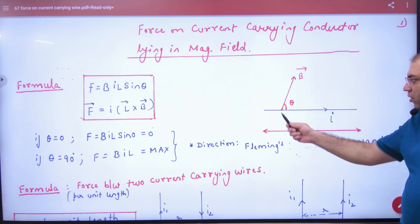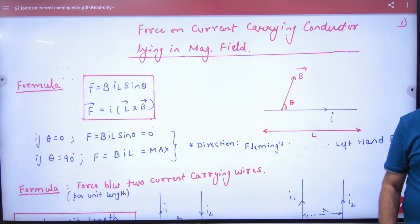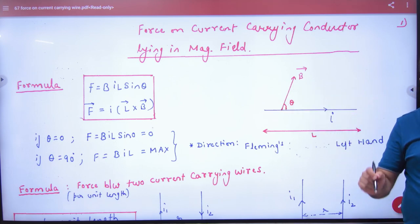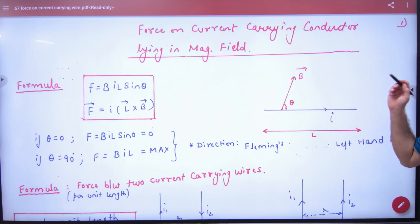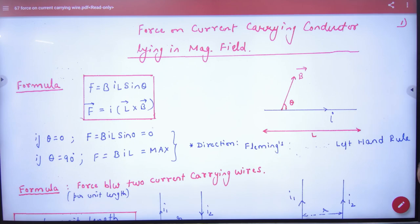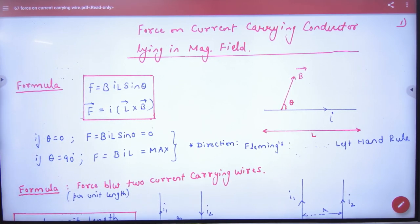And if B vector and L vector have angle theta between them, then note the formula in the booklet: F is equal to BIL sin theta. This is the formula. If current carrying wire I of length L is lying in magnetic field B, then how much force will it experience? BIL sin theta. And in the vector form, F vector is equal to I into L cross B. Note this also. I into L cross B.